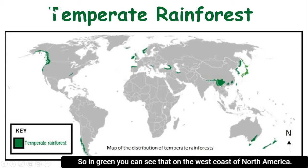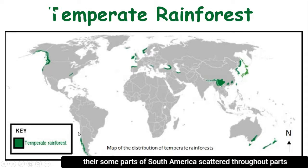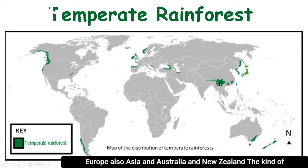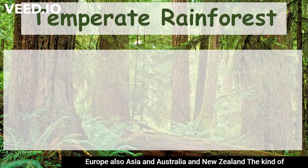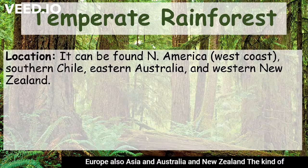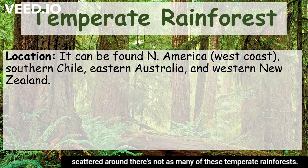In green, you can see that on the west coast of North America we have some temperate rainforest, scattered out there. Some parts of South America, scattered throughout parts of Europe, also Asia and Australia and New Zealand. They're kind of scattered around — there are not as many of these temperate rainforests.